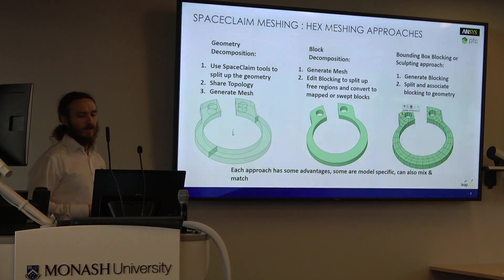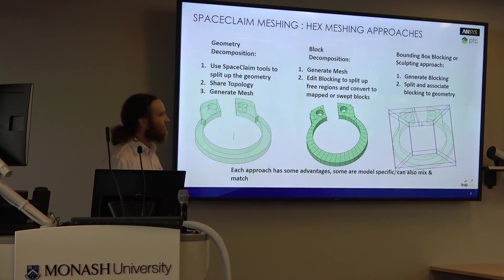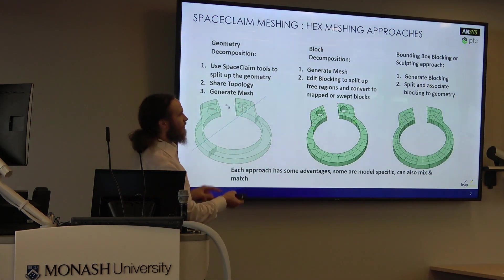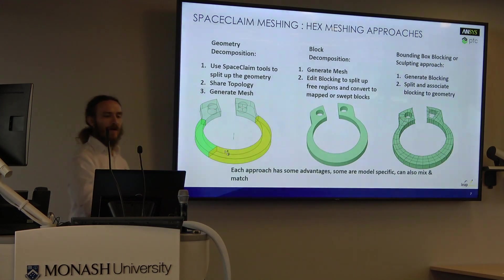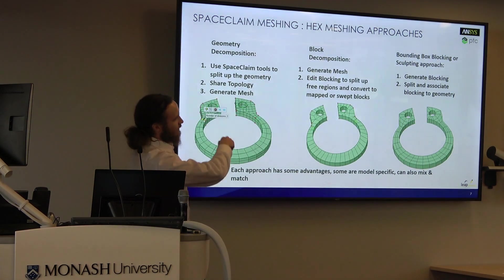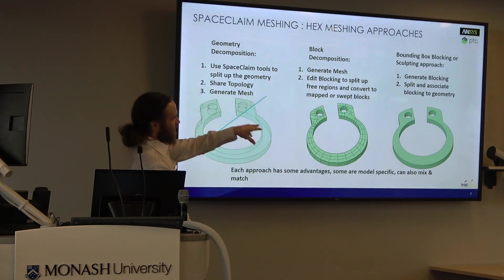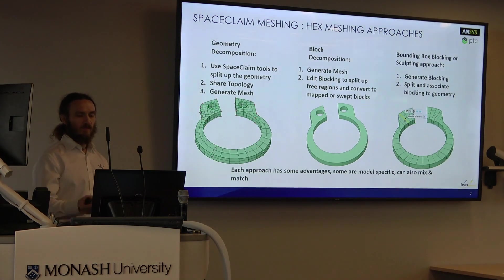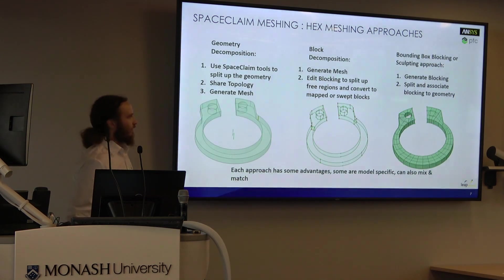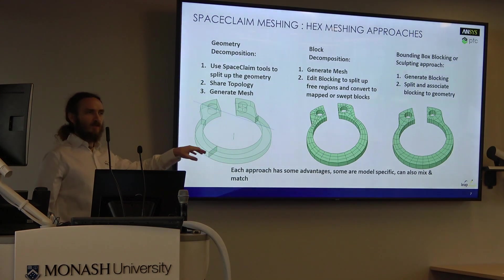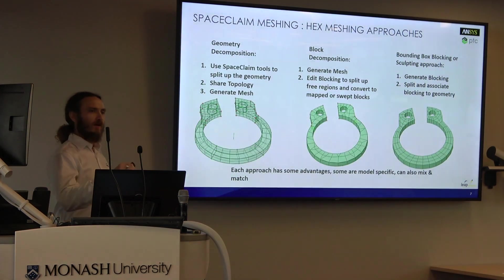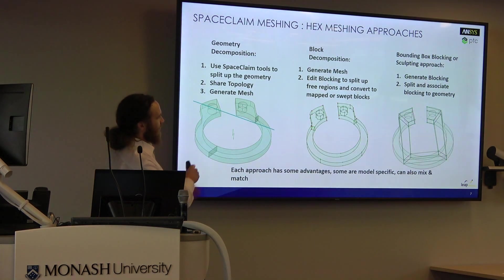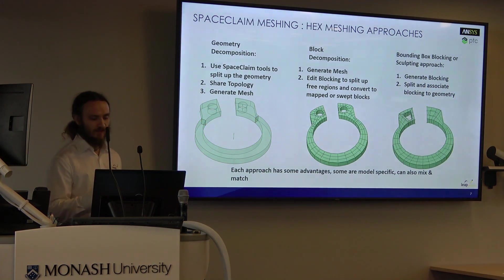On the far right we have the blocking method — an older method but very powerful and very labour intensive. Basically you take your geometry, create some primitive blocks, start splitting the blocks up, then map or associate the block features to the topology features and you end up with a mesh. You can do that in ICEM CFD. What I'm talking about is a hybrid approach where we generate a mesh using the multi-zone mesher and then use interactive tools to tweak it — changing sizing, mapping parts of the mesh, and changing the topology interactively.